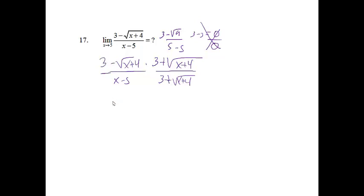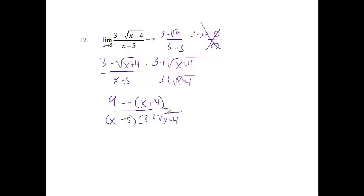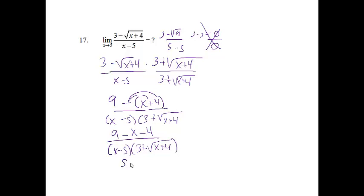If I FOIL out the numerator, I get 9, the inside and outside terms drop out, and then minus the quantity x plus 4 — notice it's minus the entire quantity. I leave the denominator alone. Carrying that minus sign through gives 9 minus x minus 4 over that denominator, which simplifies to 5 minus x over x minus 5, times 3 plus the square root of x plus 4.